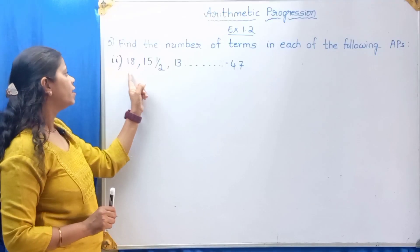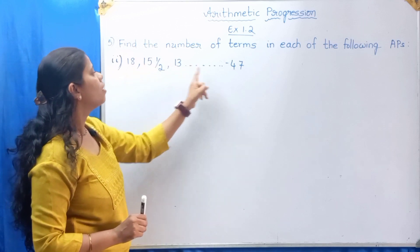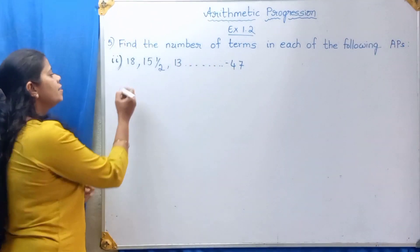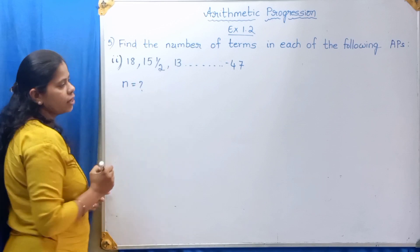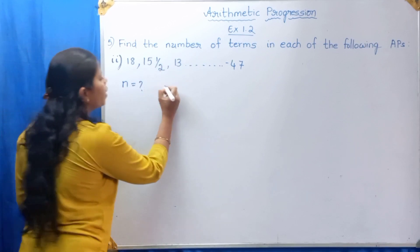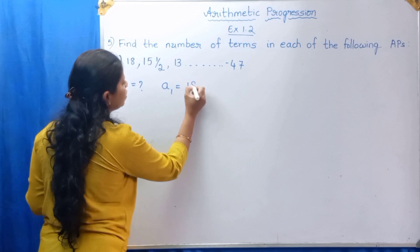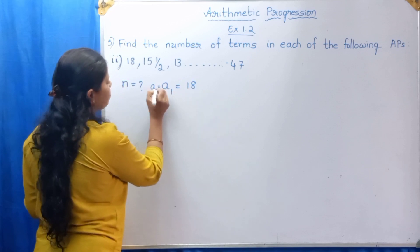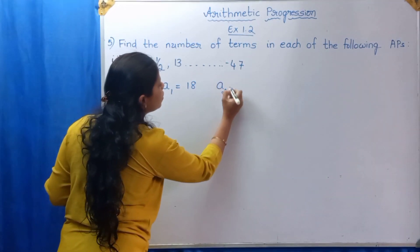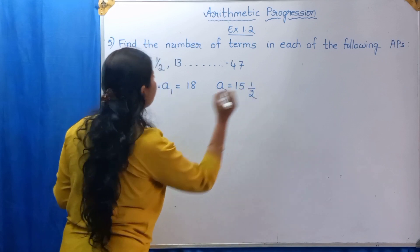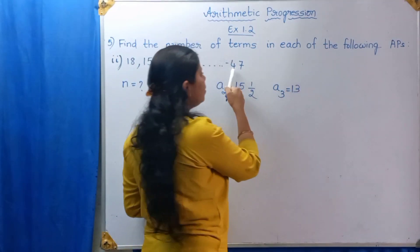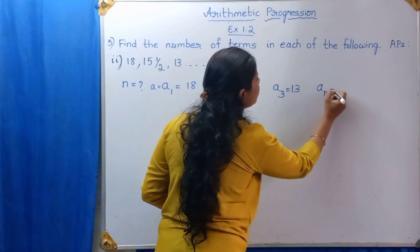Second question: 18, 15 and a half, 13 up to minus 47. We have to find out the number of terms, that is N. What is given? A1, A2, A3. A1 is equal to 18, which is nothing but A. A2 is 15 and a half, that is 15½. A3 is 13. And AN is minus 47. We don't know the number of terms for minus 47.